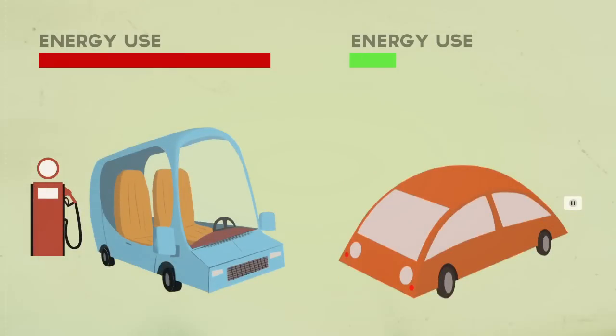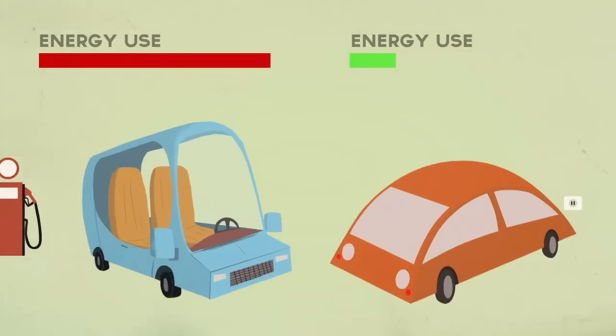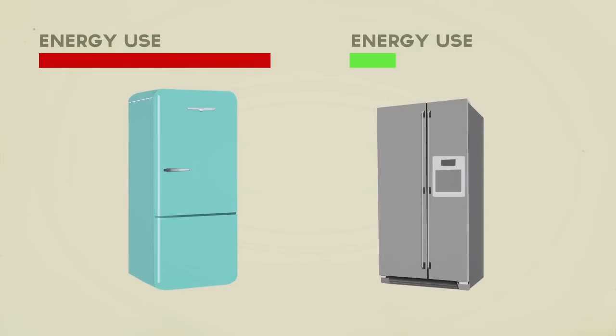Gradually, we are making cars and machines that are much more efficient and therefore use much less energy. But you can also help by switching off lights and machines when you leave a room and reducing how much you use heaters or air conditioner.